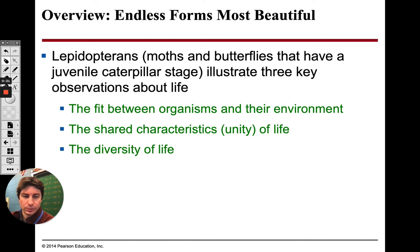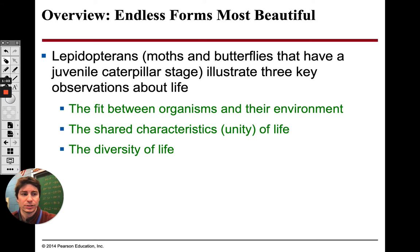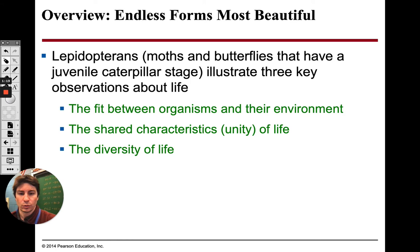Your book starts off talking about moths and butterflies, and they both have a caterpillar stage. At first they're going to be land-dwelling organisms where they can't fly, but later on they will morph into a flying organism. Three observations from this: we have an environment and these organisms fit into that environment; second, the shared characteristics of life — even though moths and butterflies are completely different organisms, they both have this caterpillar stage; and third, the diversity of life — two completely different organisms that still share some things, like wings.